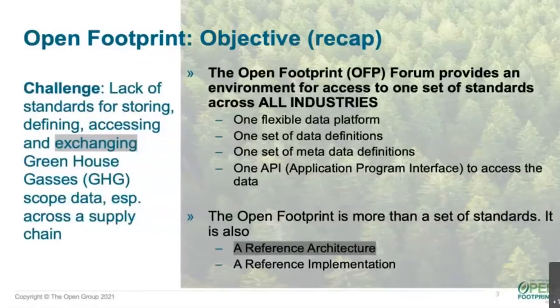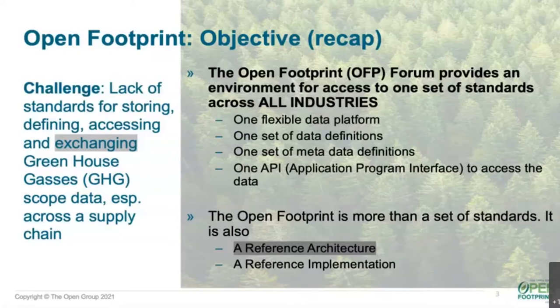Before we get into the details, let's do a quick recap to connect the dots — how exactly the objective of Open Footprint has been translated into MVP 1.0, how the reference architecture looks, and the scalability aspects. We are looking at the challenge of the lack of standards for storing, defining, accessing, and exchanging GHG scope data across the supply chain. The scope three aspects and exchange of data across the supply chain are becoming the key challenge.